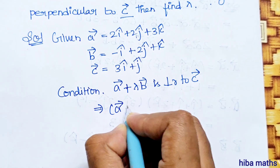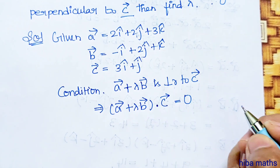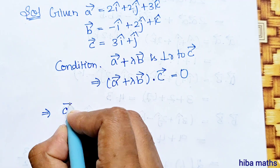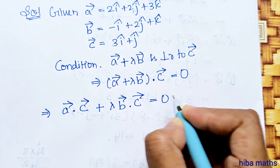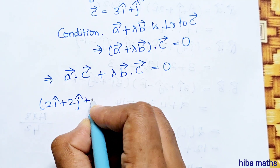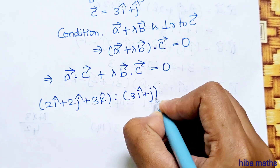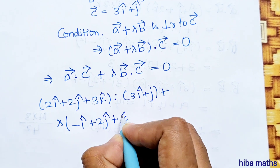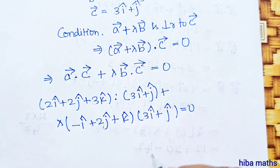This implies that (vector a plus lambda times vector b) dot vector c is equal to 0. Distributing inside, we get vector a dot vector c plus lambda times (vector b dot vector c) is equal to 0. Now substituting: vector a is 2i plus 2j plus 3k, dot 3i plus j, plus lambda times (minus i plus 2j plus k) dot (3i plus j) is equal to 0.